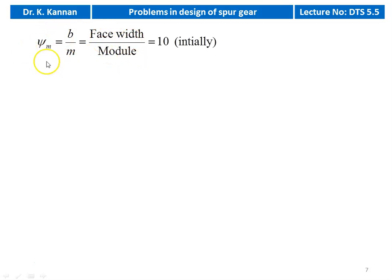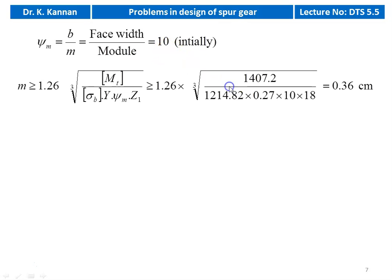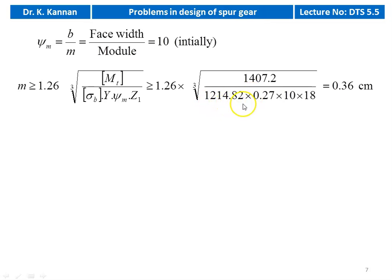Module ≥ 1.26 × ∛(design torque / (σb × Y × ψm × Z1)) = 1.26 × ∛(10,407.2 / (1,214.82 × 0.27 × 10 × 18)) = 0.36 cm.